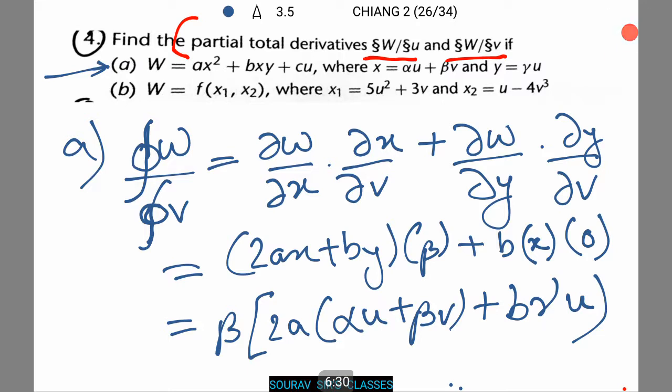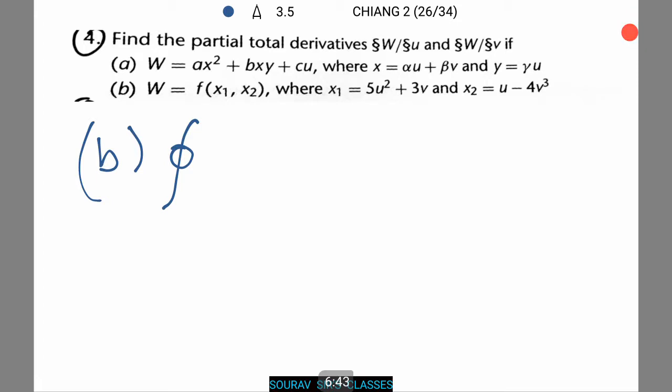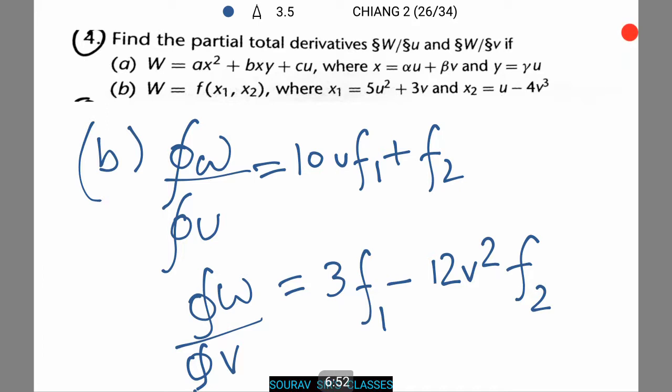Similarly repeat the process for number B. I am not going to solve that because I am going to let you try. I am just going to give you the answer. Please try it on your own. Pause the video as I am going to show you the answer in just a second. That is phi W by phi U in the second case will be 10U f1 plus f2. Phi W by phi V will be equal to 3f1 minus 12V square f2. If it matches with your answer, well a great job has been done by you.